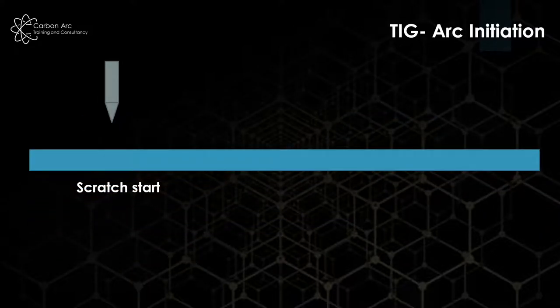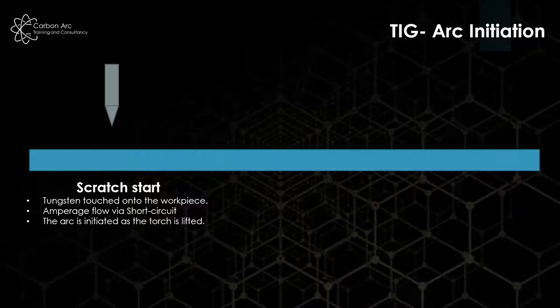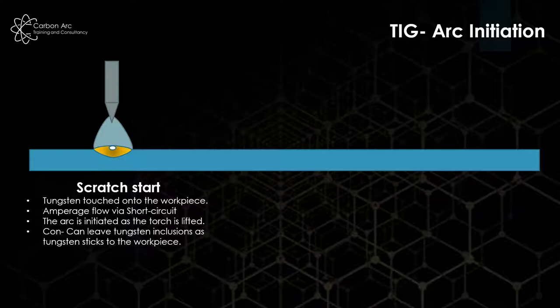How do we start that arc? There are three main methods. The first is scratch start where we take the tungsten and touch it against our workpiece. There's a flow of electricity through the tungsten into the workpiece, and when we pull the arc back up, the fact that amperage was flowing and we now make an arc gap starts our welding arc. The problem is when the tungsten touches the workpiece it can stick and leave a tungsten inclusion at our stop starts, so it's relatively cheap but can have tungsten inclusions which can be quite a major issue.